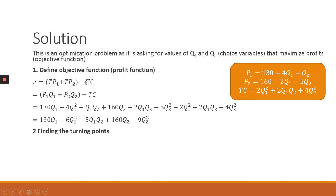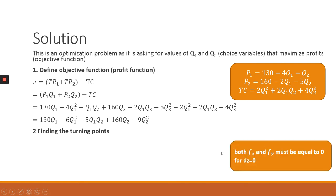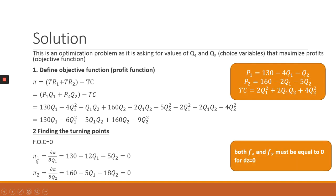Once we have defined the objective function, the next step is to find the turning points. For optimization with more than one choice variable, we require the total differential to equal zero, which means the first partial derivatives also have to equal zero. Differentiating the profit function with respect to Q1 gives ∂π/∂Q1 = 130 − 12Q1 − 5Q2 = 0, and differentiating with respect to Q2 gives ∂π/∂Q2 = 160 − 5Q1 − 18Q2 = 0.